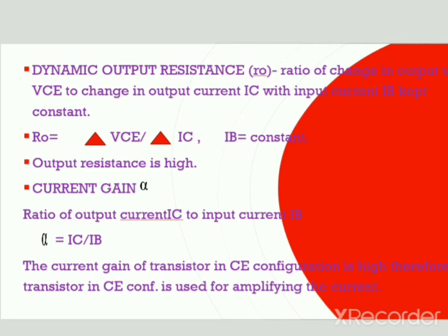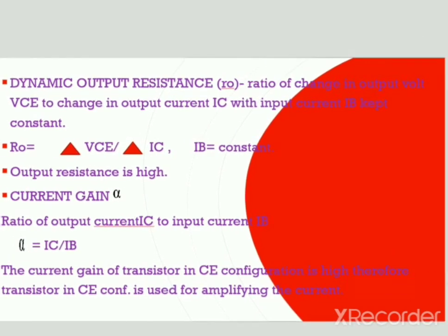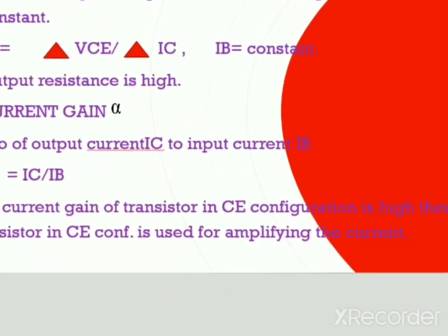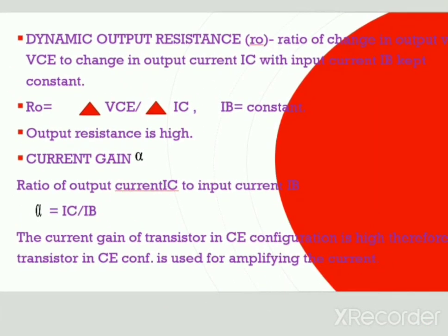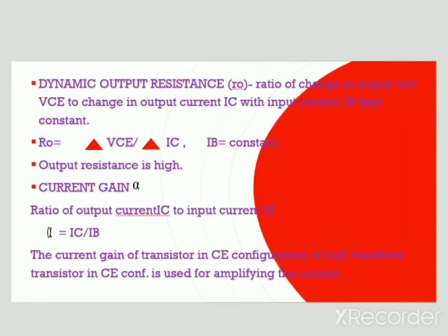The output resistance of common emitter configuration is high. Current gain is denoted by alpha, which is the ratio of output current IC to input current IB. Alpha = IC / IB. The current gain of the transistor in CE configuration is very high, which is why the transistor in CE configuration is used for amplifying current.